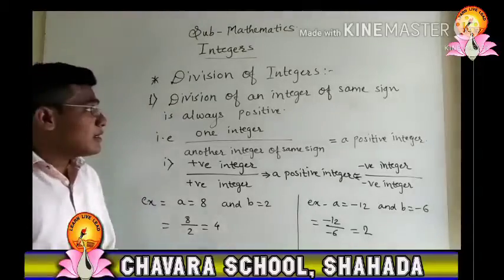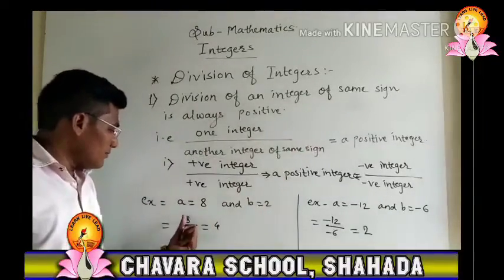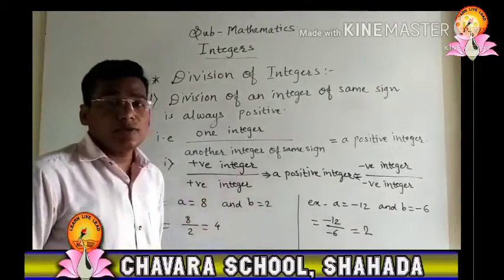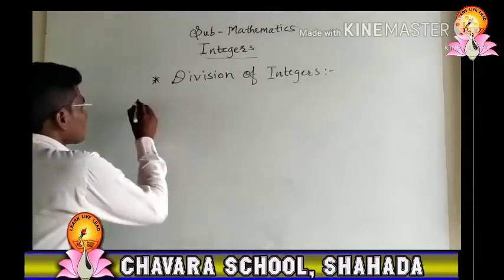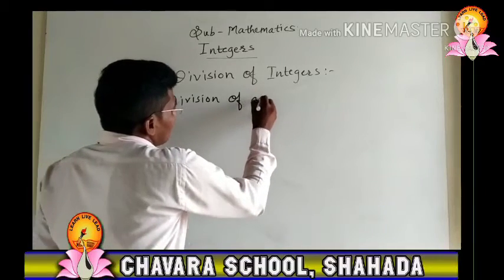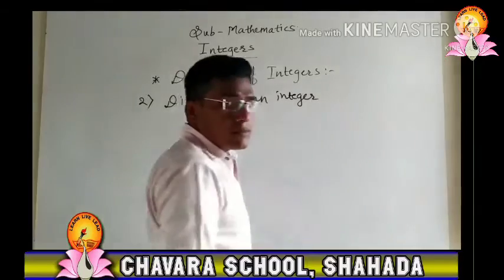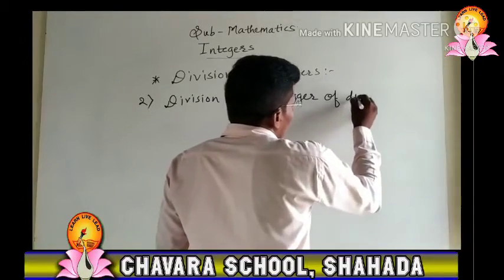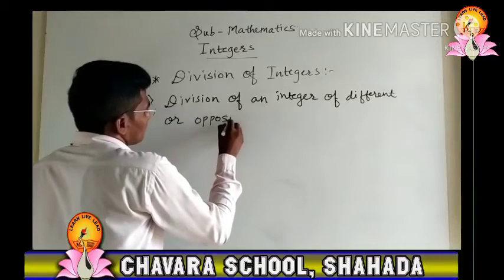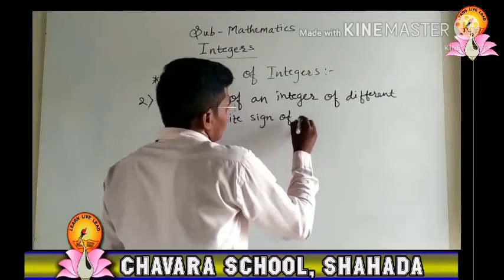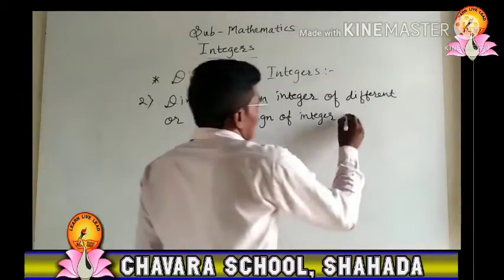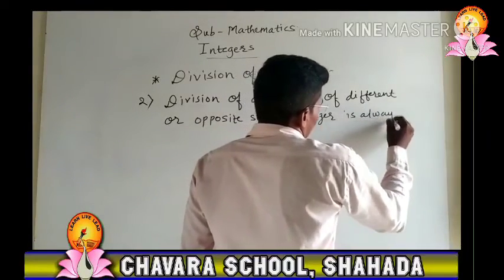Hence, the property says that division of integers of the same sign always gives a positive integer. Now we will turn to the next rule. Rule number two is: division of integers of different or opposite signs is always negative.